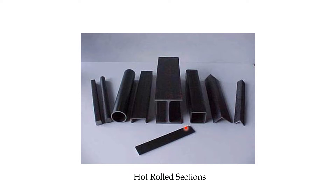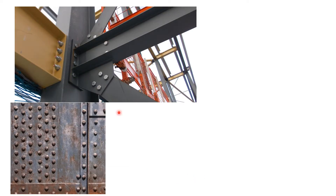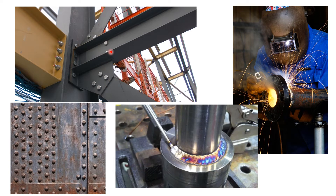Hot-rolled sections are formed because molten steel is poured into molds and these section shapes are formed — that is why they are called hot-rolled sections. For connections, the materials used are bolts and nuts, rivets, and welding. These are the three main types of connections used for joining steel members.